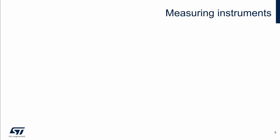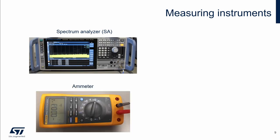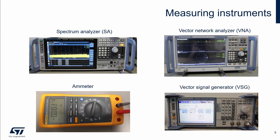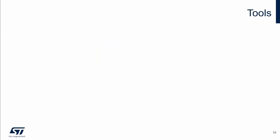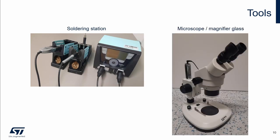We use the following measuring instruments: a spectrum analyzer and ammeter, which are important mainly for transmitter measurements; a vector network analyzer, which can be used for measurement of filters or antenna matching; and a vector signal generator, which is useful for sensitivity measurement of the receiver. Tools needed for this task are a soldering station and a microscope or magnifier glass.